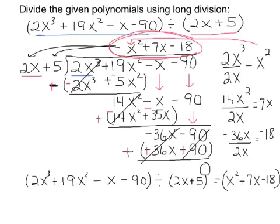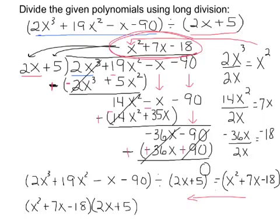But keep in mind, when we divide, you can also reverse that with multiplication. So this also means that x squared plus 7x minus 18 times 2x plus 5, if we did it right, should result in 2x to the third plus 19x squared minus x minus 90. We'll leave that to you to multiply out just to check.